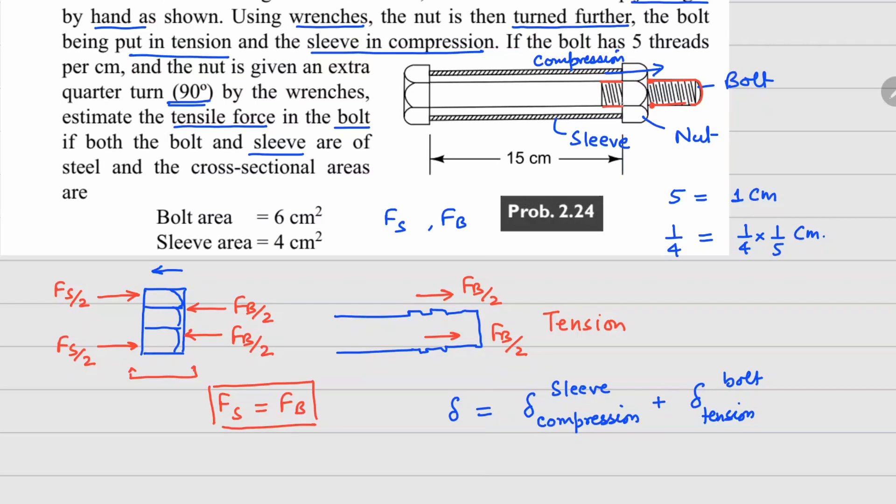At the same time, your sleeve is going to be under compression. The net result of these two is going to be how many turns you are giving to the nut so that it moves to the left.